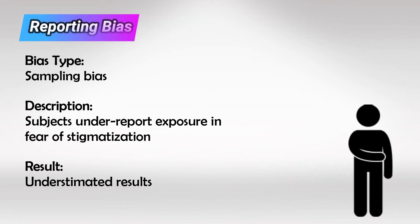Reporting bias is when the study subjects under-report factors due to fear of stigmatization. For example, if you're doing a study on obesity and you spread questionnaires, the subjects will under-report drinking beer or eating meat in fear of stigmatization. We can resolve this bias by anonymity.